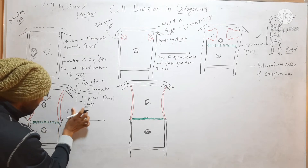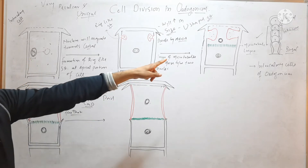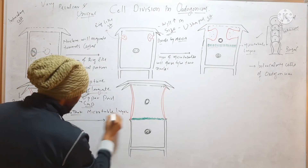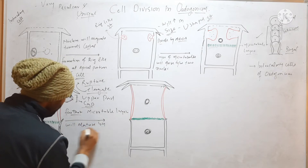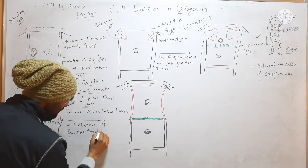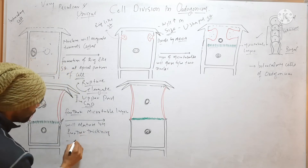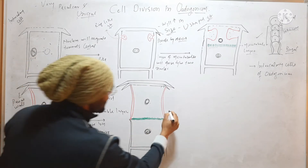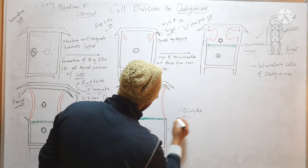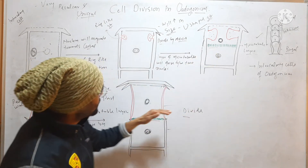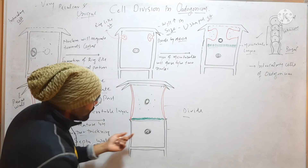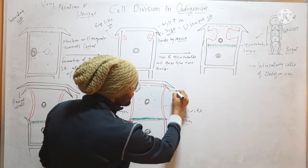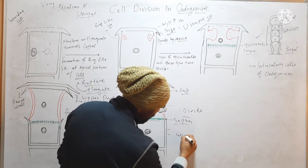After elongation, the microtubule layer will mature by further thickening and form septa — a wall between the two cells. By maturation of this septa or microtubule layer, the two cells will separate. So this cell is separated from the other cell by this septa. Now two cells are separated: one cell has a cap, and the other cell is without a cap.